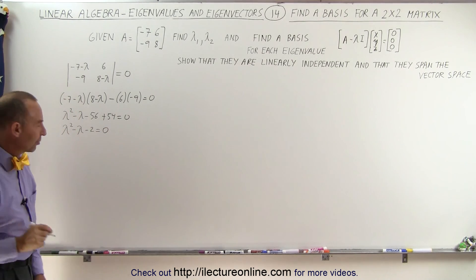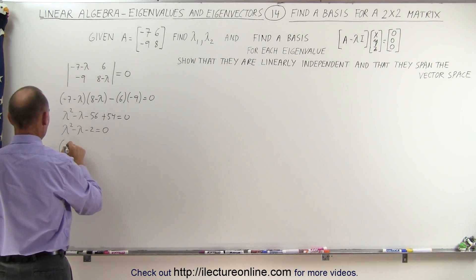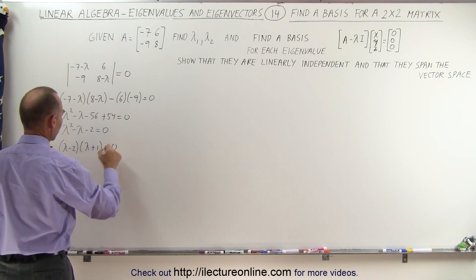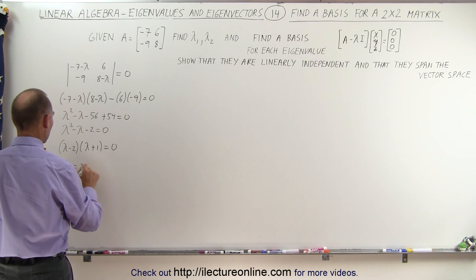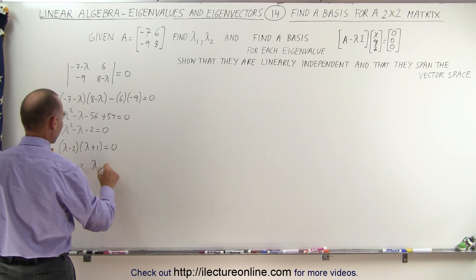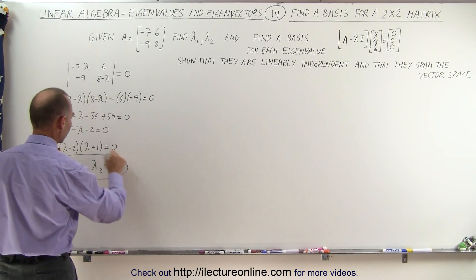And that looks like it can be factored. So we get lambda minus 2 times lambda plus 1 equals 0, which means that the two eigenvalues lambda 1 is equal to 2 and lambda 2 is equal to negative 1. So there are the two eigenvalues.